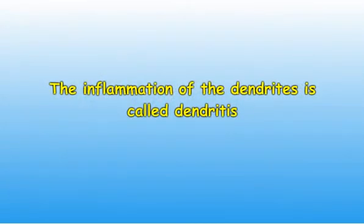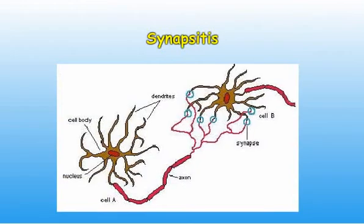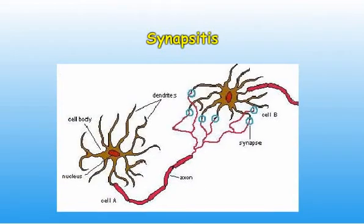It is noted that dendritis precedes nerve cell death or apoptosis, and that in most psychiatric disorders the nerve cells are still alive but not functioning normally due to the inflammation of the dendrites. Synapse numbers are also affected, and this may be described as synapsitis. However, as Professor Armstrong's research confirms, the dendritic spines seem to determine the synapse numbers rather than vice versa.